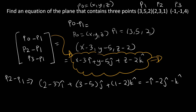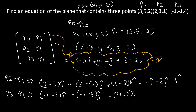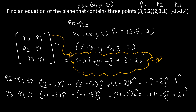For P3 minus P1, we get negative 1 minus 3 i-hat, negative 1 minus 5 j-hat, and 4 minus 2 k-hat. This gives us negative 4 i-hat, negative 6 j-hat, and positive 2 k-hat. So the third row is −4, −6, 2.